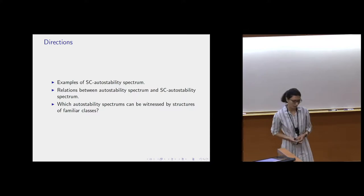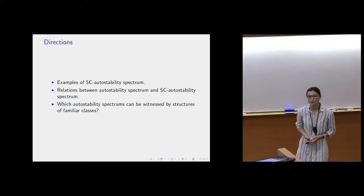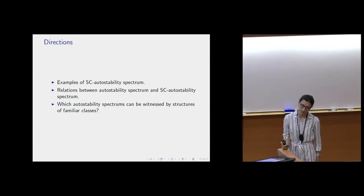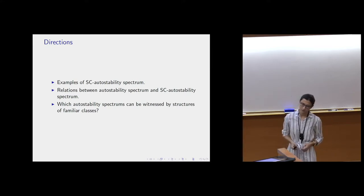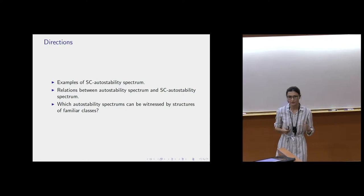What can we discuss here? First, the examples of a C-autostability spectrum and in particular the examples of the degree of C-autostability. Then we can talk about relations between the two spectra: between autostability spectra and C-autostability spectra. Another direction is which autostability spectra can be realized by structures from familiar classes like lattices, graphs, and so on.